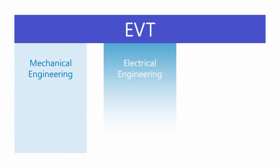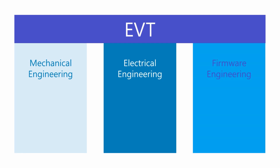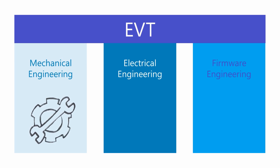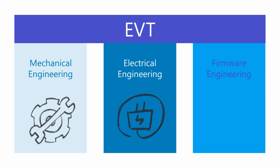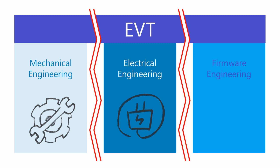The phase of Engineering Verification Test identifies problems from each discipline where all teams work independently at the same time. For example, mechanical engineering makes proof-of-concept prototypes to ensure correct product dimensions and mechanics, while electrical engineers make electric prototypes with different components working at the same time. The purpose is to make sure that each discipline focuses on its own problems and solves them first before bringing everything into the complete system. By separating disciplines, engineers can really focus.